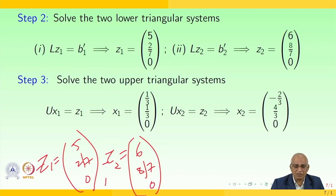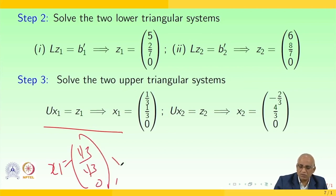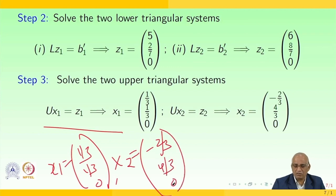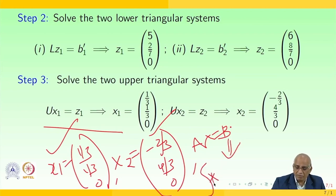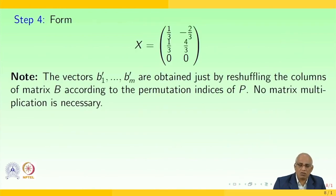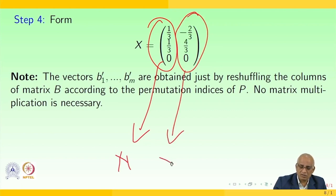Now solve the two upper triangular systems: Ux1 = z1, which gives one solution x1 = [1/3, 1/3, 0]; and Ux2 = z2, giving another solution x2 = [−2/3, 4/3, 0]. So essentially you get x1 and x2, forming x = [x1, x2], the solution to Ax = b with multiple right-hand side vectors b1 and b2.